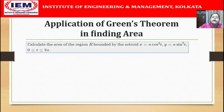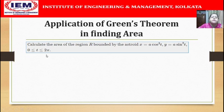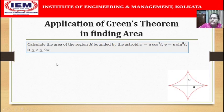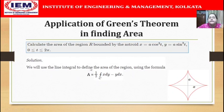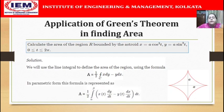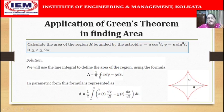The question is: calculate the area of the region R bounded by the asteroid, which is given in parametric coordinates as x equals a cos³t, y equals a sin³t, where t varies from 0 to 2π. We know the asteroid will look like this figure. We remember that the area of the region R is given by: half the line integral of x dy minus y dx along the contour C. In parametric form, this may be written as half the integral of (x dy/dt minus y dx/dt) dt, where t varies from α to β — here α is 0 and β is 2π.